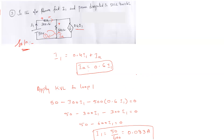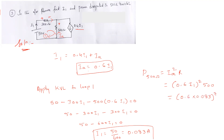Now the power dissipated in the 500-ohm resistor is given as Ia squared into R. The value of Ia is 0.6 I1, so it is (0.6 × 0.083) whole squared into 500. After simplification this comes to approximately 1.25 watts. So the power dissipated in the 500-ohm resistor is 1.25 watts.